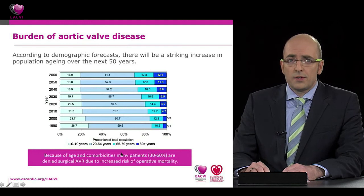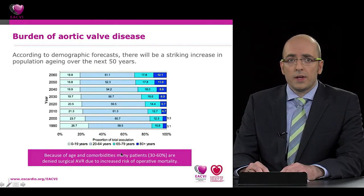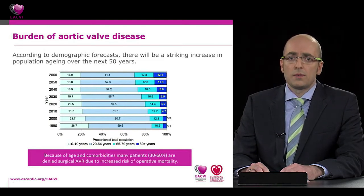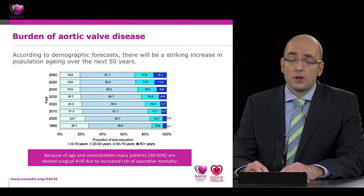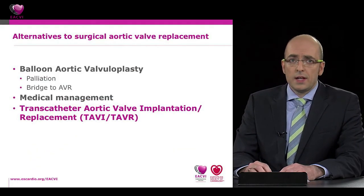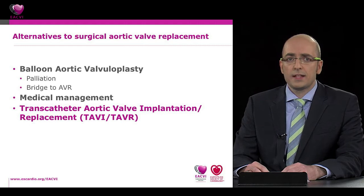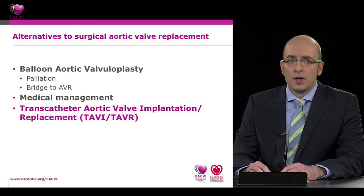According to demographic forecasts, there will be a striking increase in population aging over the next 50 years. By the year 2050, more than 1.3% of the population will be over age 65. Because of age and comorbidities, 30 to 60% of these patients are denied surgical aortic valve replacement due to increased risk and operative mortality. The only real effective therapy today is transcatheter aortic valve implantation or replacement.